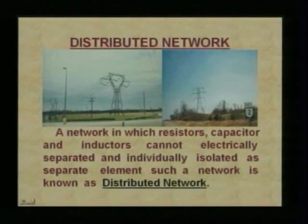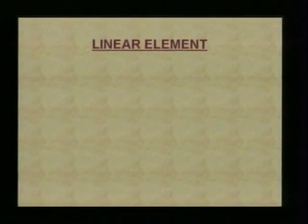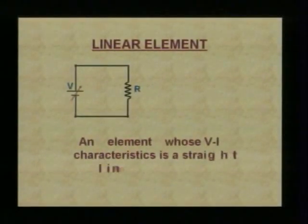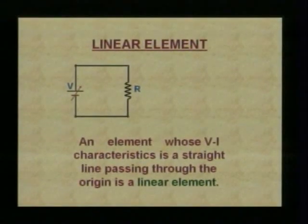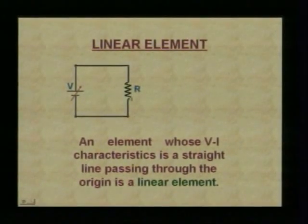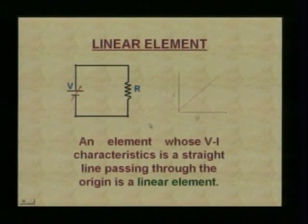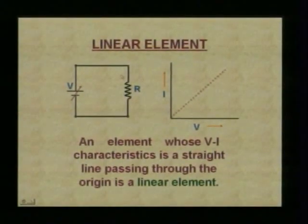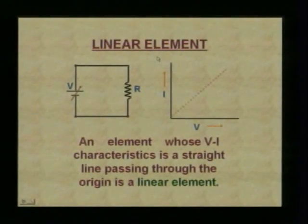Now let us talk about linear elements. An element whose V-I characteristics is a straight line passing through the origin is called a linear element. If we observe a voltage source with resistance and plot the characteristics, it comes out as a straight line passing through origin — such a type of element which gives us V-I characteristics of a straight line is called a linear element.